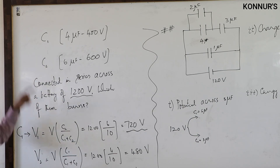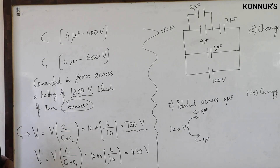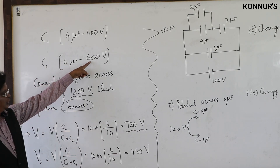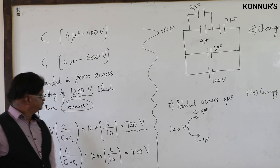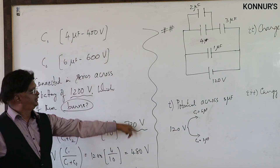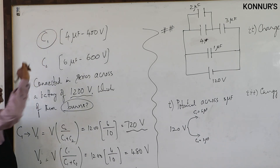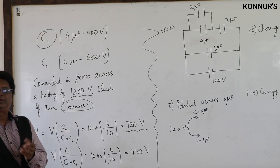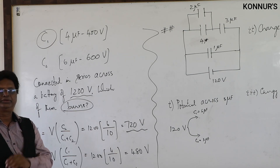The voltage rating of C2 is 600 volts, and it has only 480 volts — so C2 is safe. But C1 with a rating of 400 volts has 720 volts across it. Therefore C1 will burn. So though the question involves a burning capacitor, it is simply a division of potential.